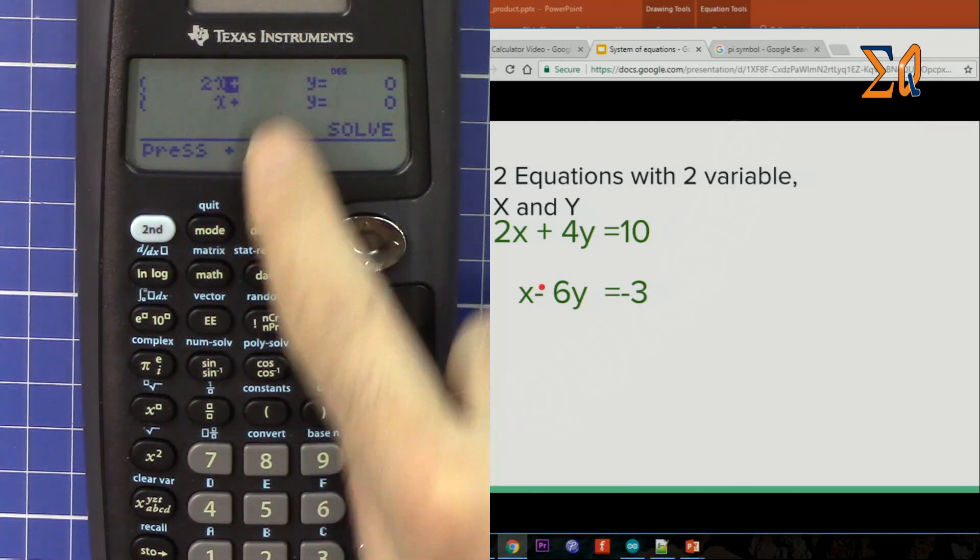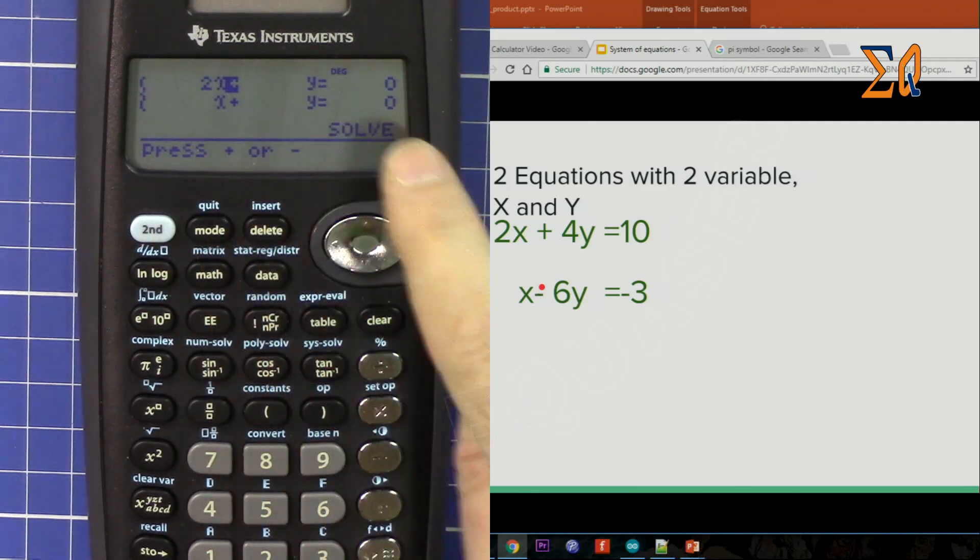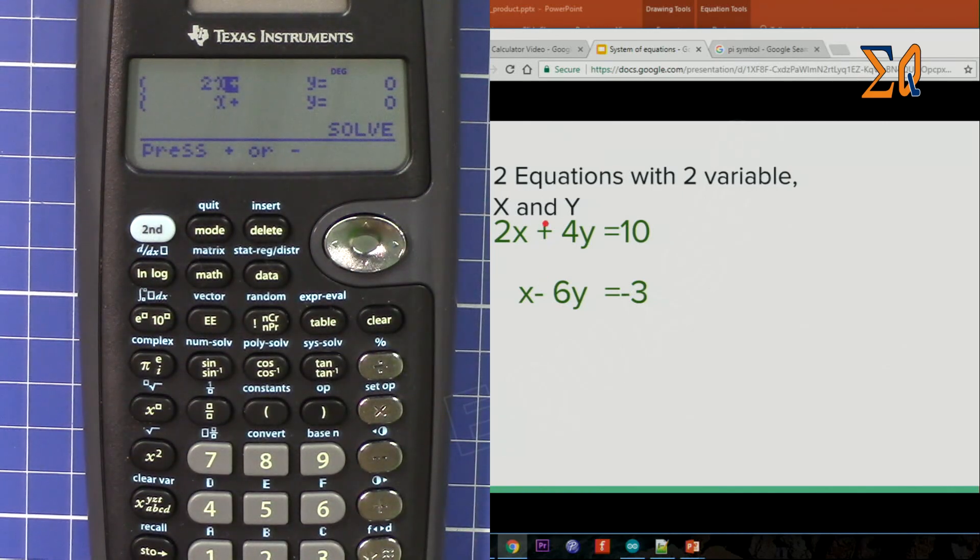The cursor moves. It says press plus or minus. This is plus, so just press plus and then 4 for the y. Press equal sign and then we get 10 on the right side.